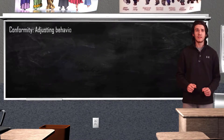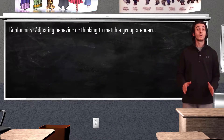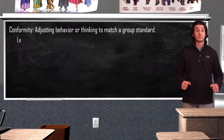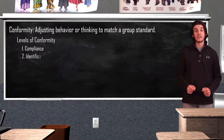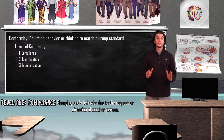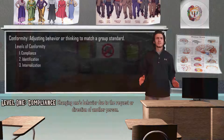In social psychology, conformity is when we adjust our behavior or thinking to match a group standard. According to research completed in 1958 by Harvard professor Herbert Kelman, there are three levels of conformity: compliance, identification, and internalization. Our first level of conformity is compliance, which is just when we change our behavior because someone else asked us to.